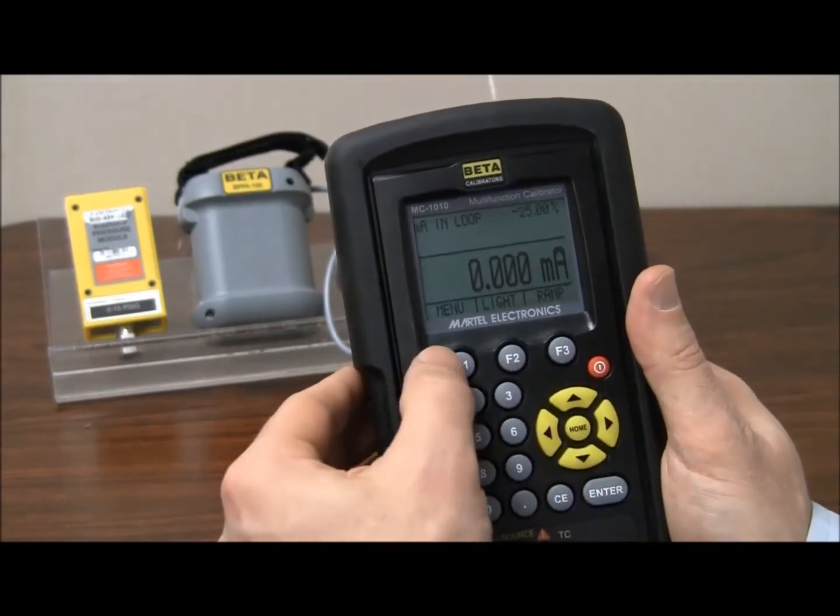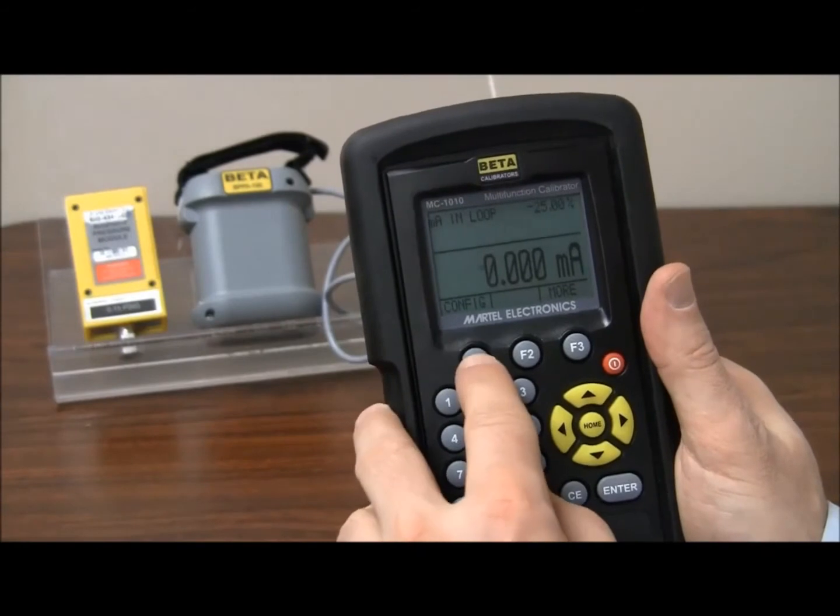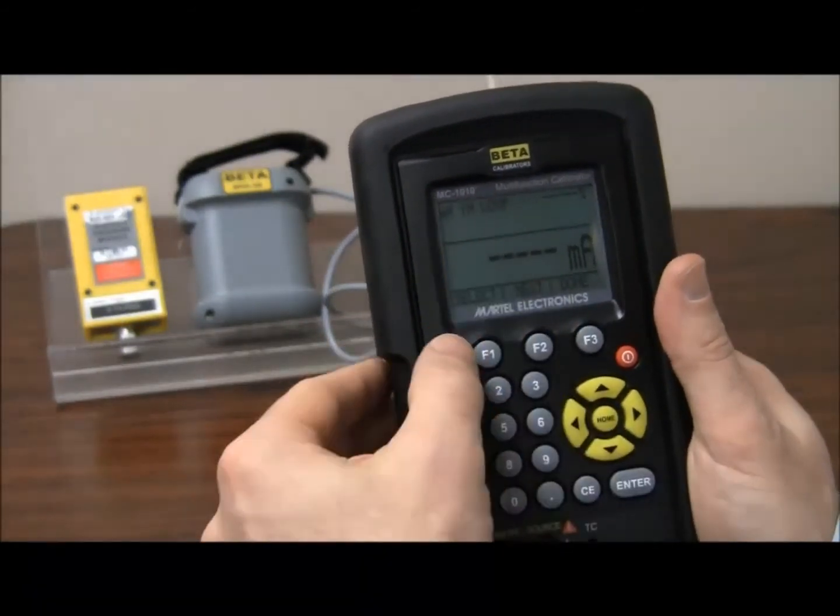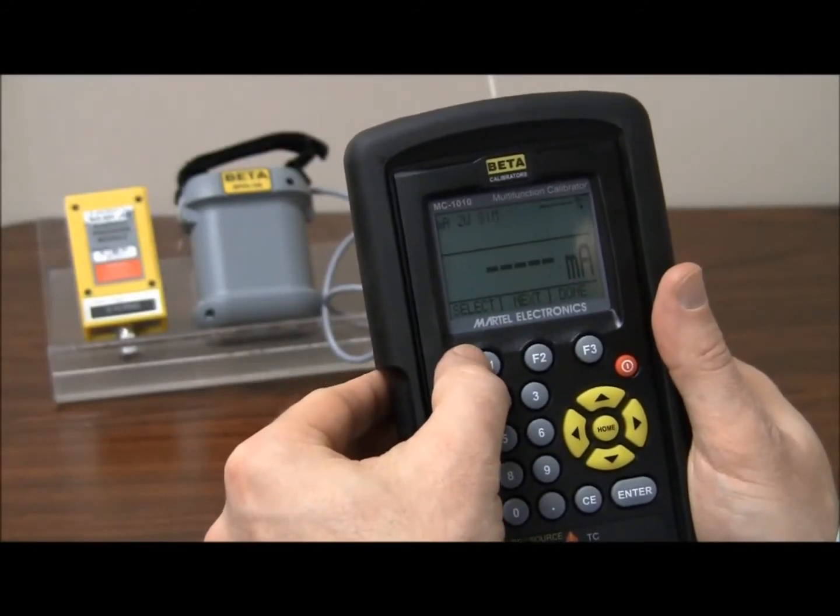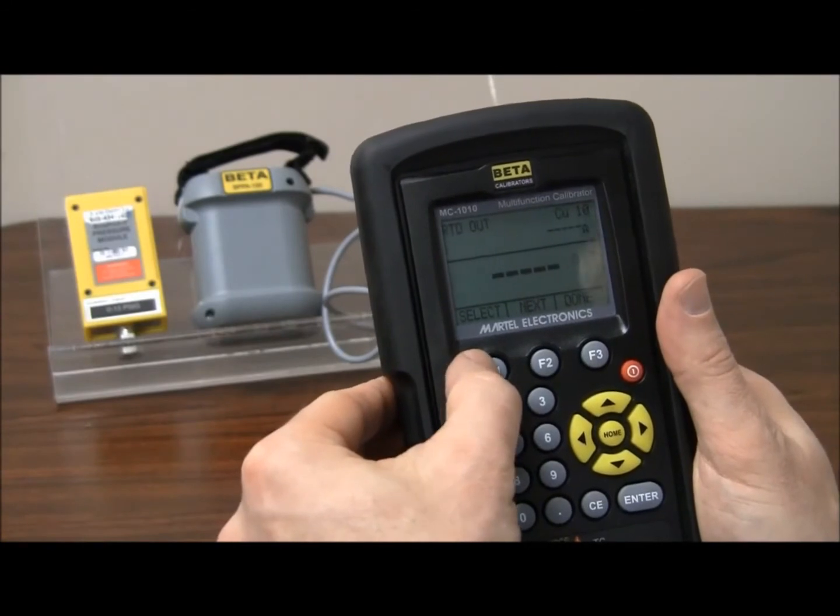You'll see config, hit config, and you see milliamp in is blinking. You're going to select that and toggle through until you see the menu you are interested in.